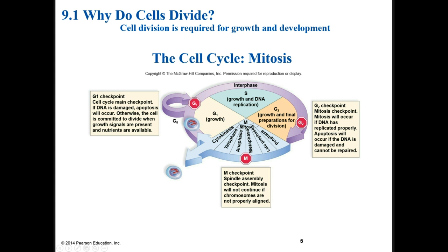Why do cells divide? Cell division is required for growth, development, and repair. Most multicellular organisms have three categories of cells: stem cells, other cells that are capable of dividing, and permanently differentiated cells. The cell division of eukaryotic cells by which organisms grow or increase in number is called mitotic cell division. After cell division, the daughter cells may differentiate, becoming specialized for specific functions. The repeating pattern of divide, grow, and differentiate, then divide again is called the cell cycle.